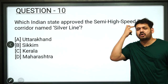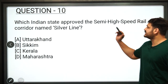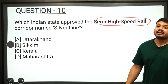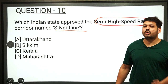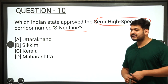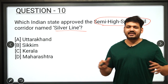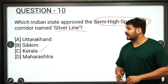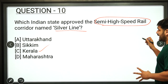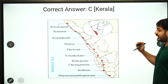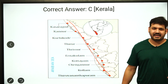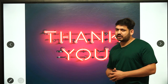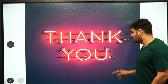The last question: which Indian state has approved a semi high-speed rail corridor? It is called the Silver Line project, connecting the North and South of the state. Options are Uttarakhand, Sikkim, Kerala, or Maharashtra. The correct answer is option C — Kerala. Remember, this Silver Line project is related to high-speed railways and has been developed in Kerala, connecting the south. This concludes the 10 AM series. I hope you score 9 marks.